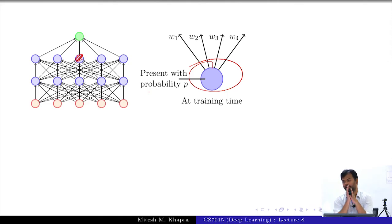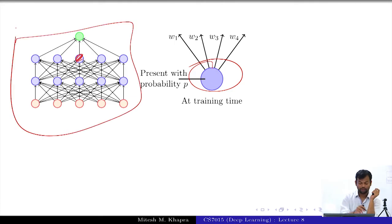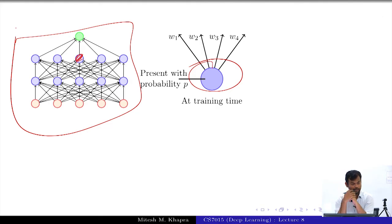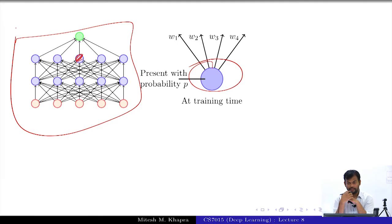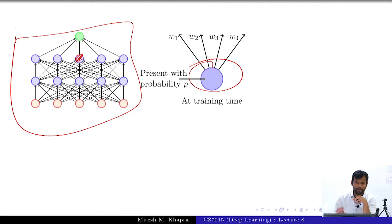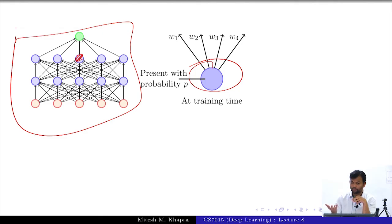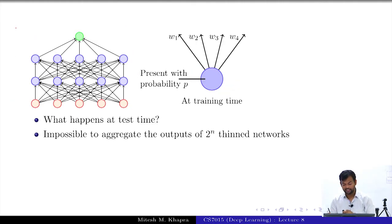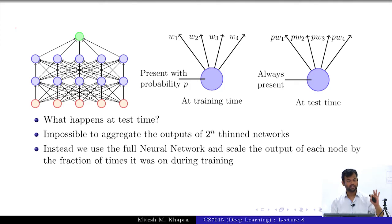The simple trick dropout uses at test time is: since each node was present only a P fraction of the time during training, we scale its weights by P. That is how much we trust this node — it only participated in P fraction of the decisions. So if it says to apply weight W1, we only apply P times W1.